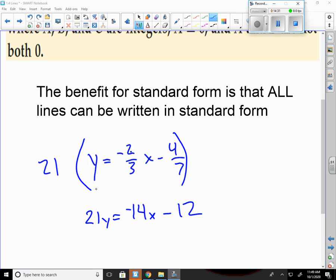It has to be in the form ax plus by equals c so I need to get this x over to the other side so it's fourteen x plus twenty-one y equals negative twelve.